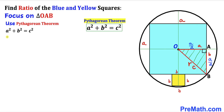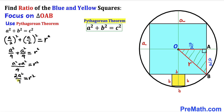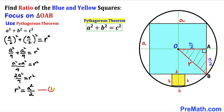Filling in the Pythagorean formula: (a/2)² + (a/2)² = r². Simplifying gives a²/4 + a²/4 = r², which reduces to r² = a²/2. Let's call this Equation 1.